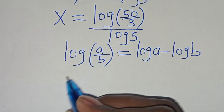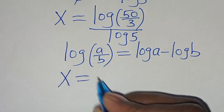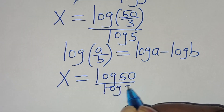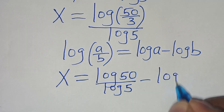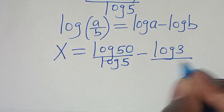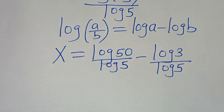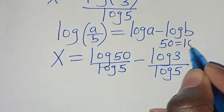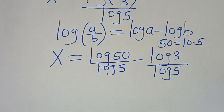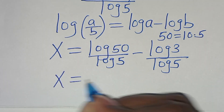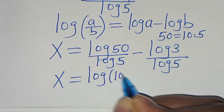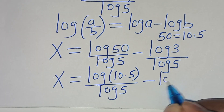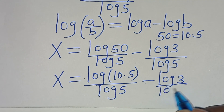Let's apply this property, so that now here we have x equal to log 50 divided by log 5, subtract log 3 divided by log 5. So here we have x equal to log of 10 times 5, divided by log 5, subtract log 3 divided by log 5.